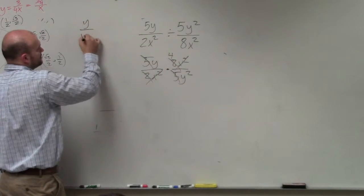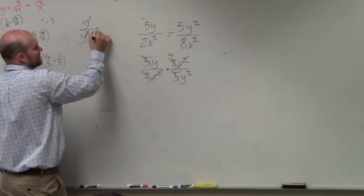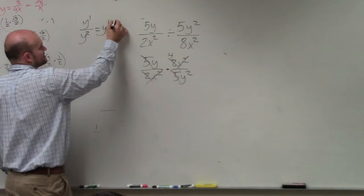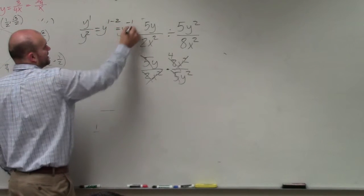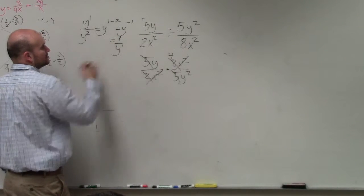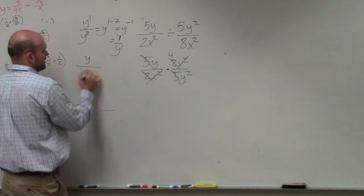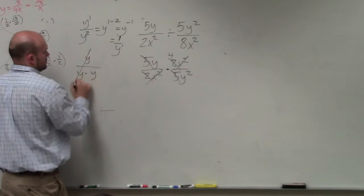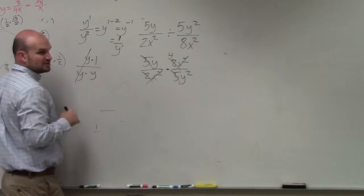y over y squared, hopefully you guys understand that's going to be y over 1 minus 2, which is y to the negative first, which is 1 over y to the first. Yes? Or you could look at it like this. So it's 1 over y.